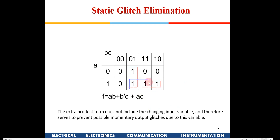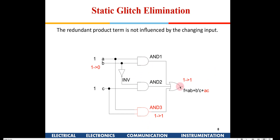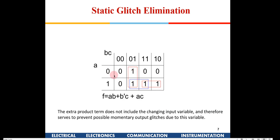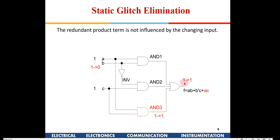If you are implementing a function with NOR gates, there could also be a static zero hazard. In a product-of-sums (OR-AND) implementation, you make groups of zeros. In that case, you have to ensure that no two adjacent zeros are left out ungrouped, to avoid static zero hazards.